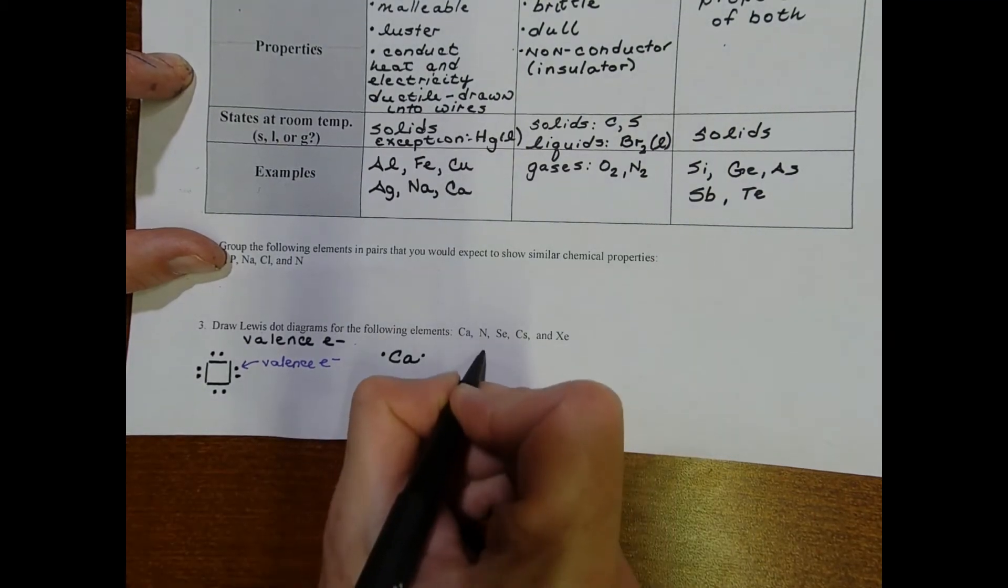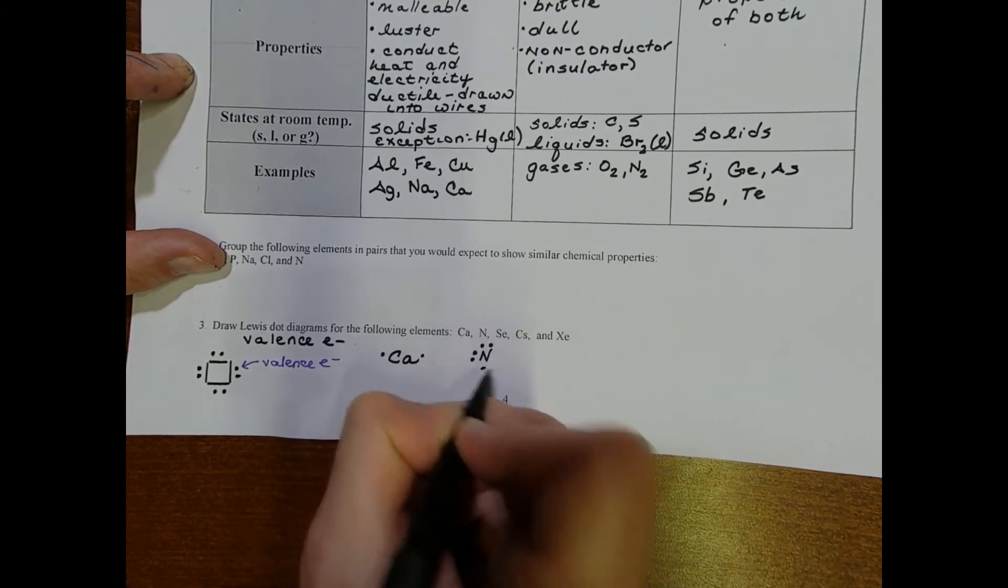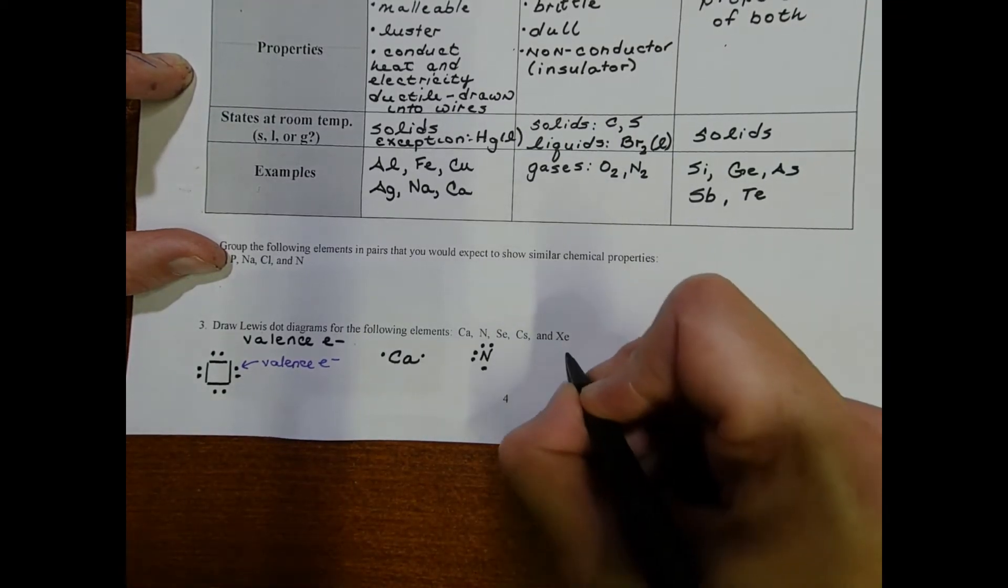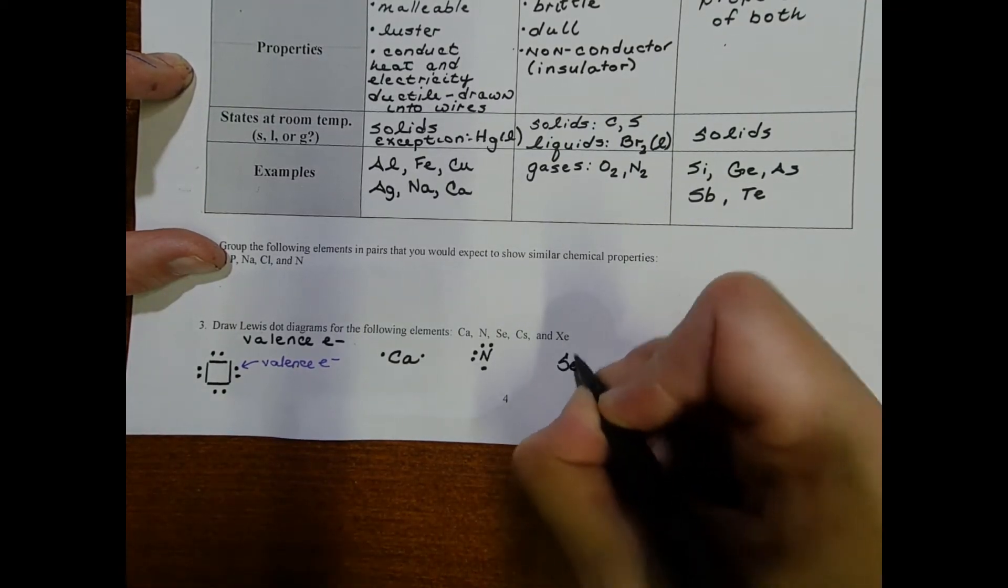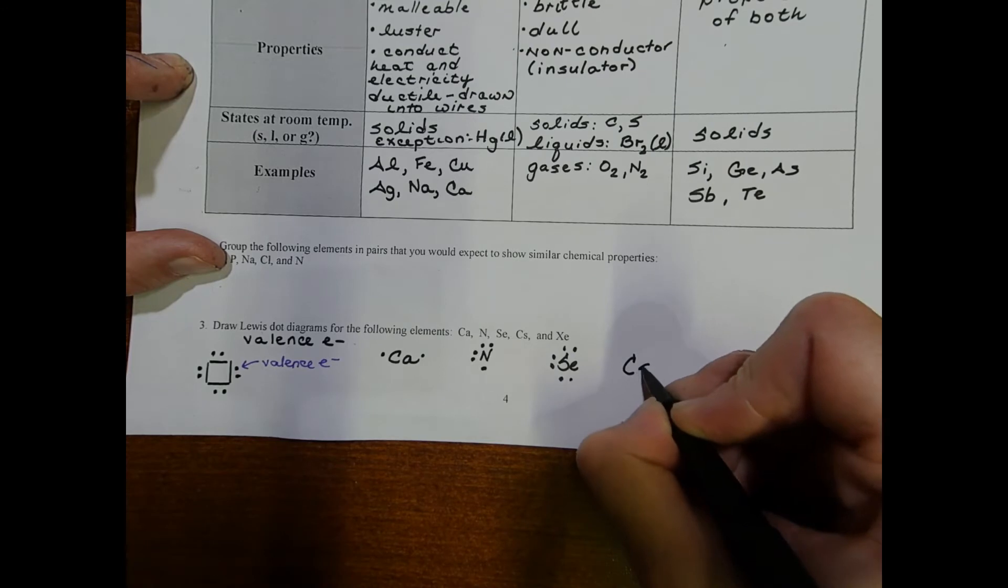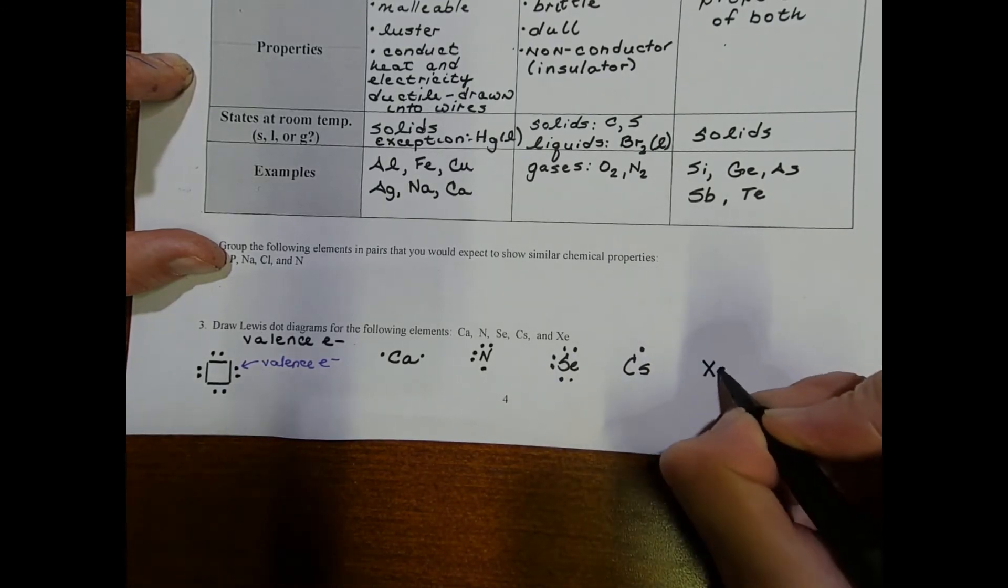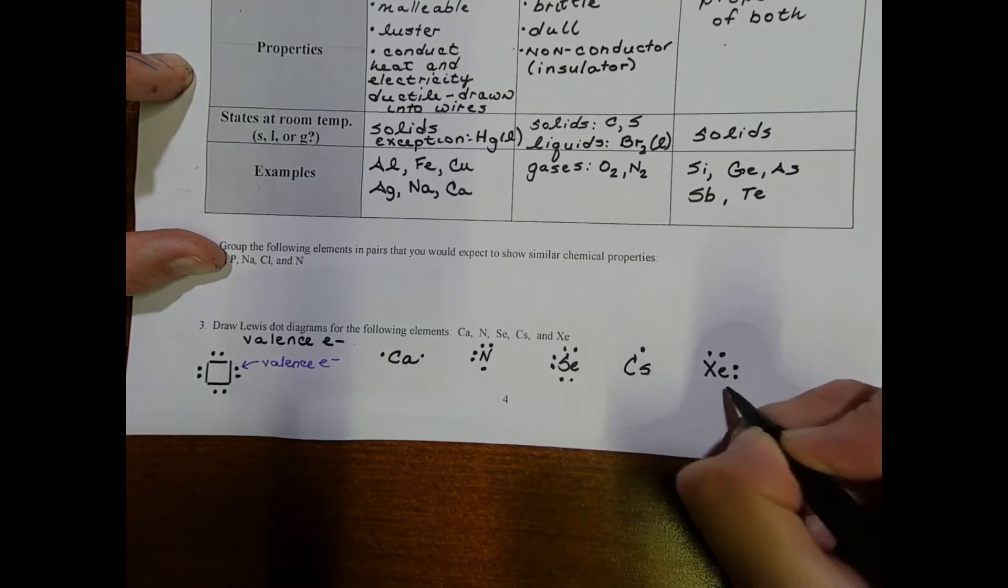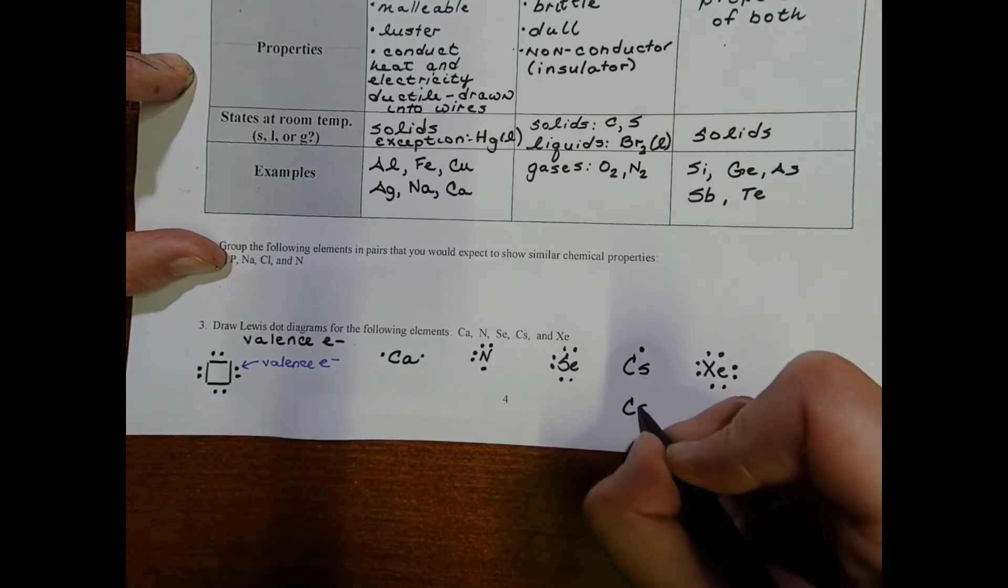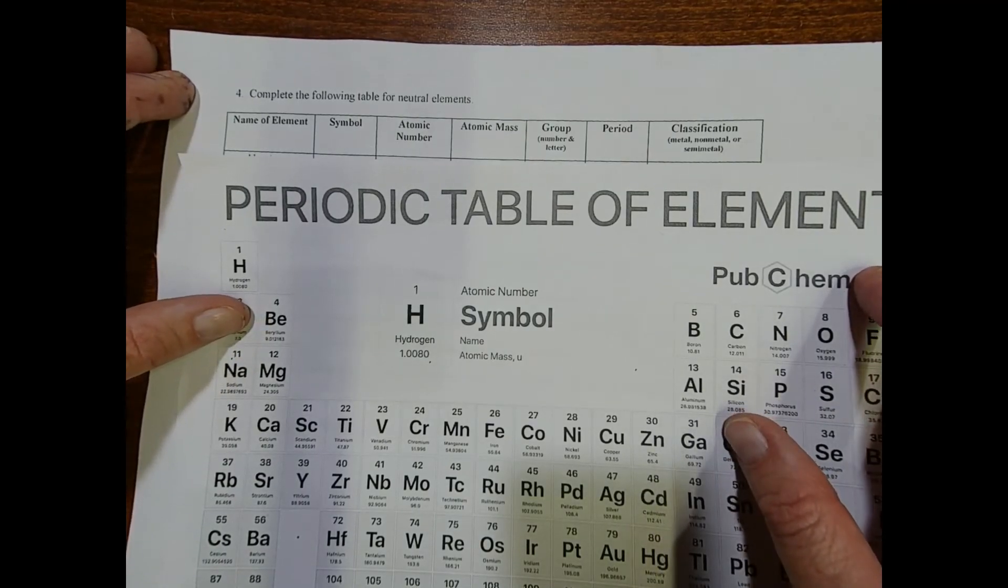Selenium is in group six, so I'll do six dots around selenium. Cesium is in group one. And then we have xenon, which is a noble gas, so that's going to have to have all eight dots. But again, with the cesium, the position of the dot doesn't matter—you could do it like that too if you want.